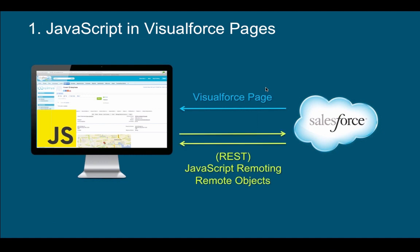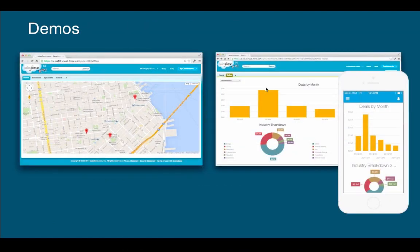The way you access Salesforce data from JavaScript typically involves one of three approaches: the REST APIs, JavaScript remoting, or remote objects. The REST API is an option, but that counts against your API limits. So probably better ways today are JavaScript remoting and very soon remote objects. Let me show you some quick examples and then we will look at some code.